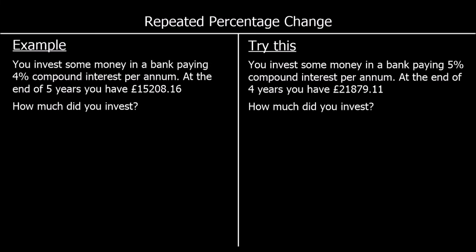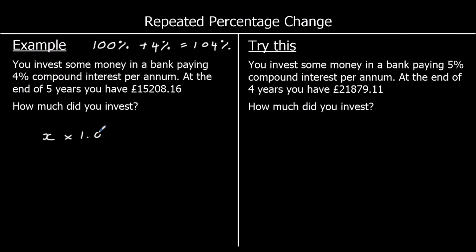If we've got 4% compound interest, that means every year we have our 100% plus 4%, so at the end of each year we've got 104% of what we started with. To add on 4%, we can use a multiplier, which is 104% written as a decimal. So if we have our original amount of money, which we call x, we can add on 4% by multiplying it by 1.04.